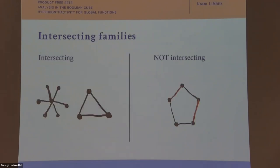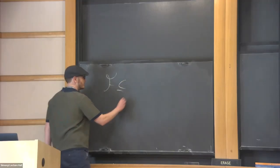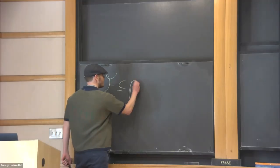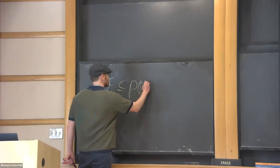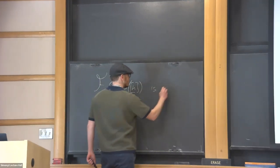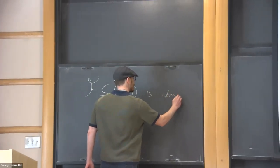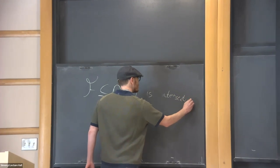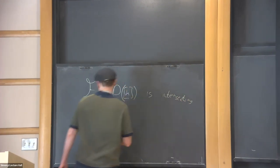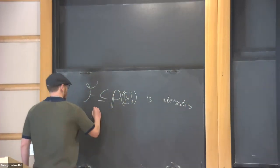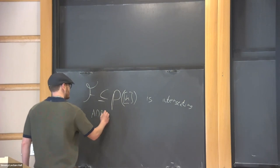Let's give some examples. One example: a family F of sets is intersecting if the intersection of each pair of sets in F is non-empty.